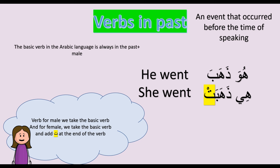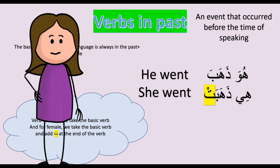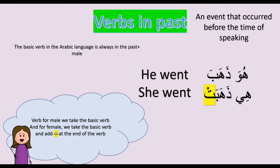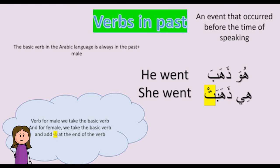The past tense verb — الفعل الماضي — refers to an event that happened in the past. You need to know that the basic verb in Arabic is always in the past and used for male. So the basic verb is always past tense and masculine.